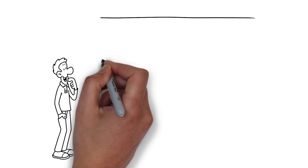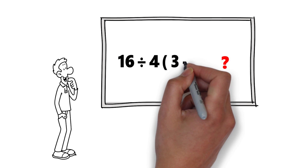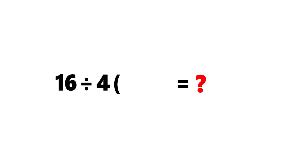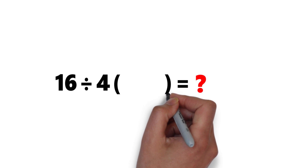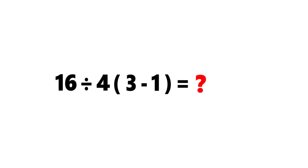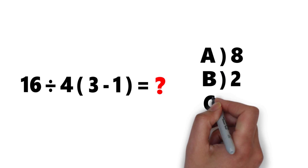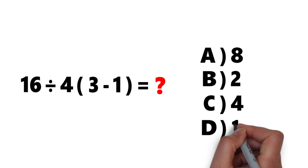Here is one of my favorite questions because it's easy to understand but might be challenging to solve. You need to calculate the question mark, and on the other side of the expression you have 16 divided by 4, multiplied by the value in parentheses (3 minus 1). You have four choices: A) 8, B) 2, C) 4, and D) 1.